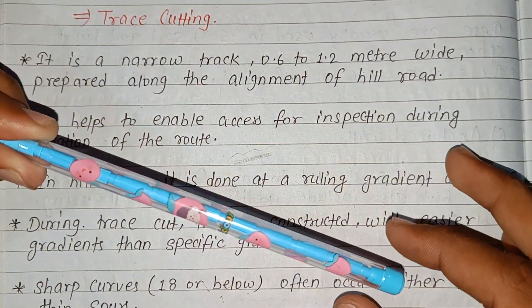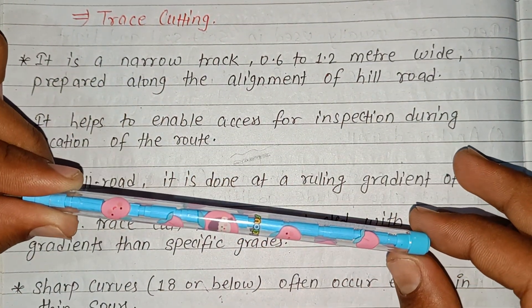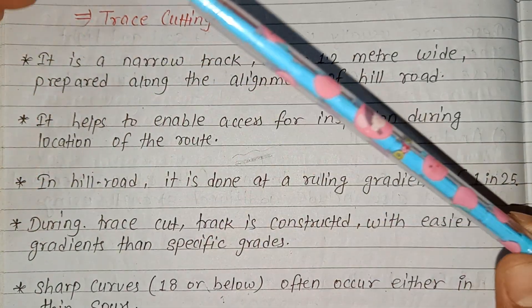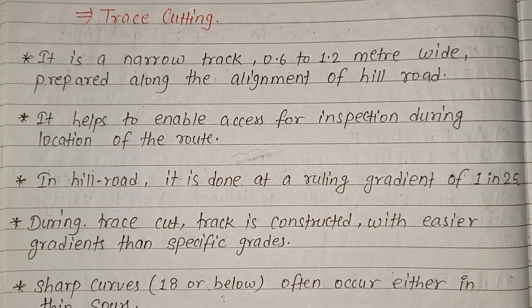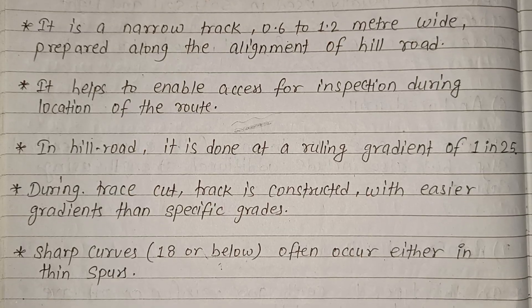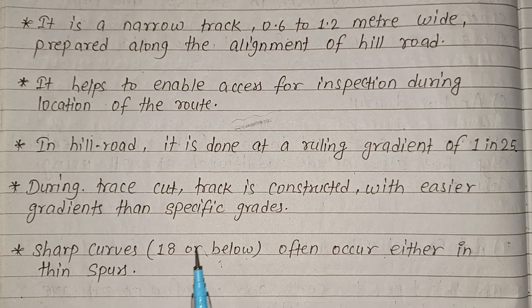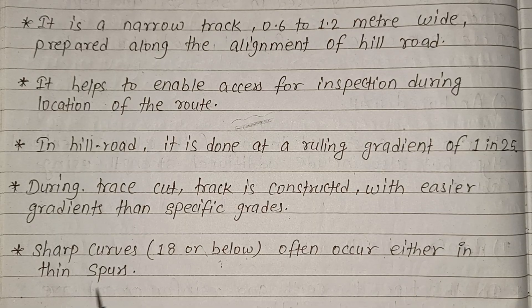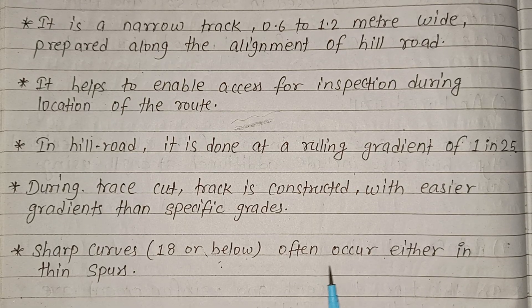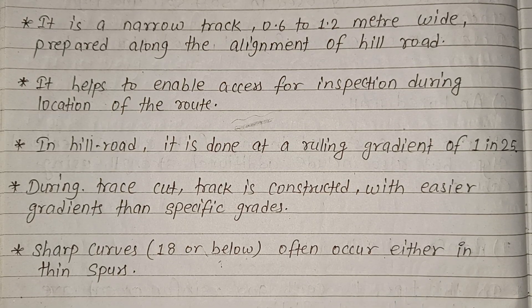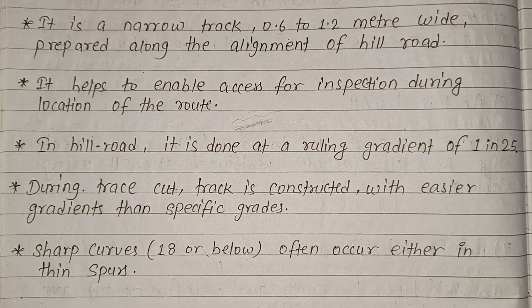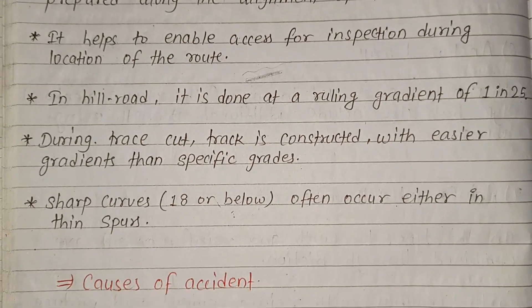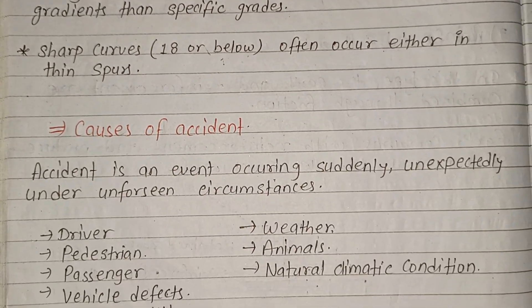The path is made with the same gradient, and then the curve radius is 18 meters or below. These often occur in thin spots where they can be seen within 80 meters.